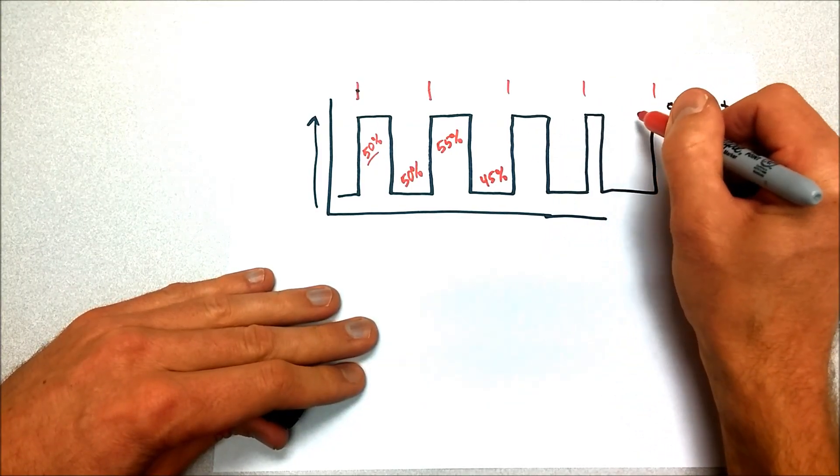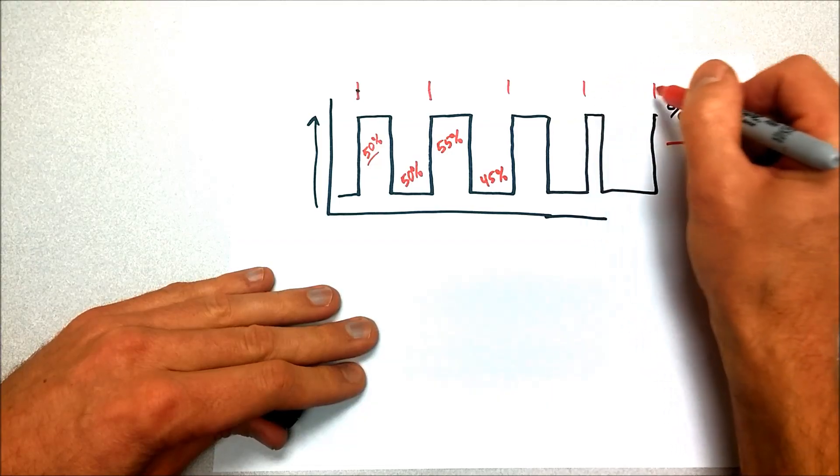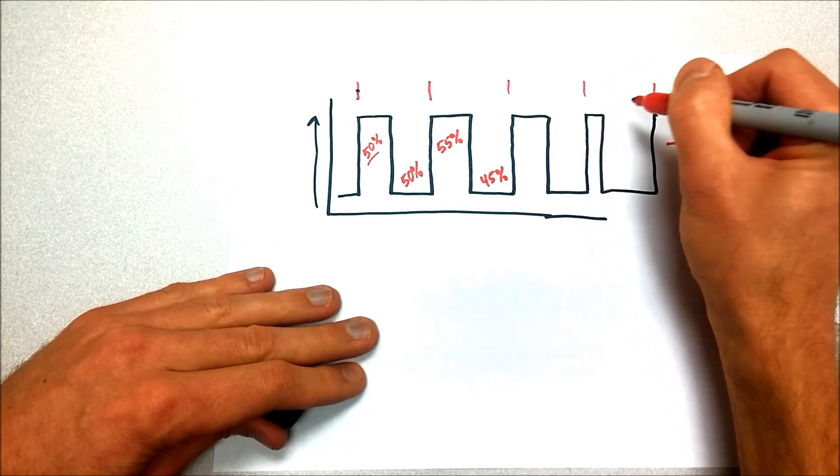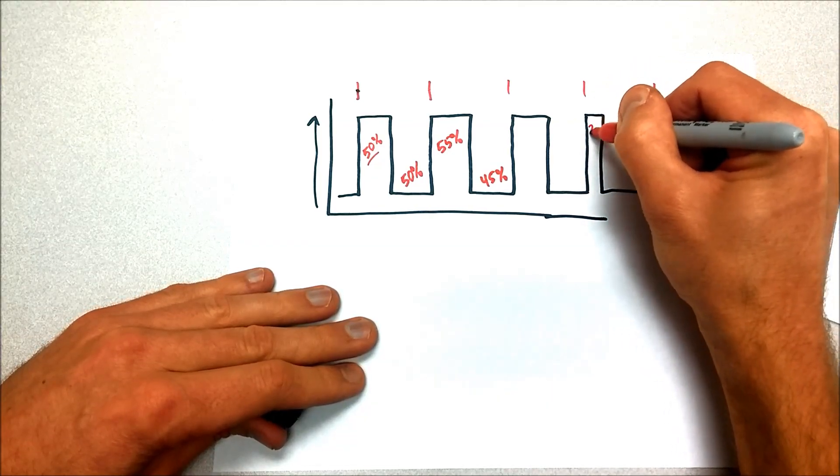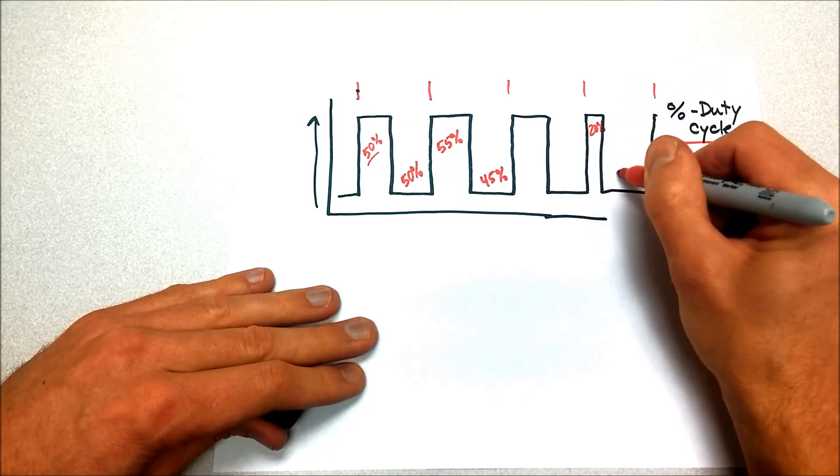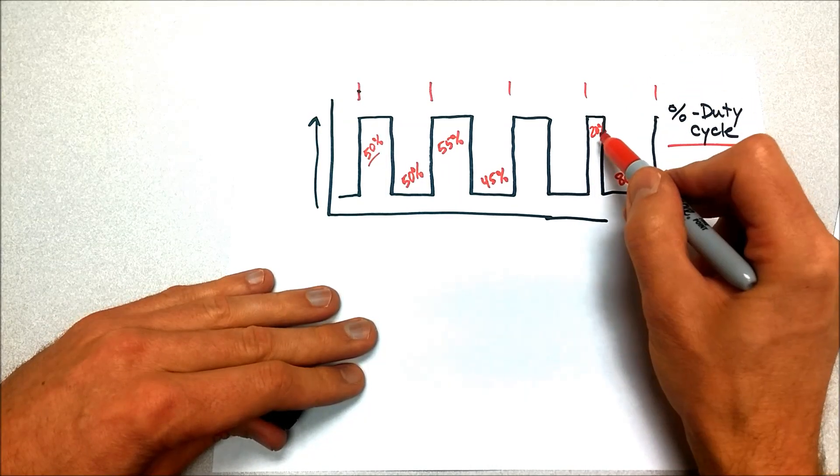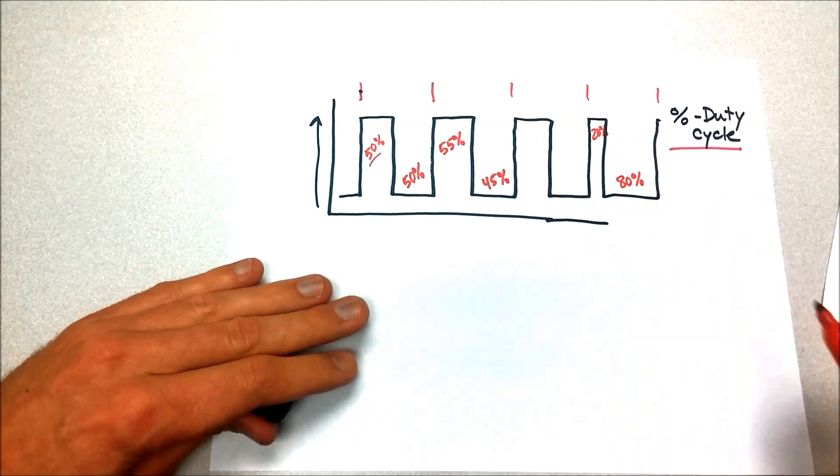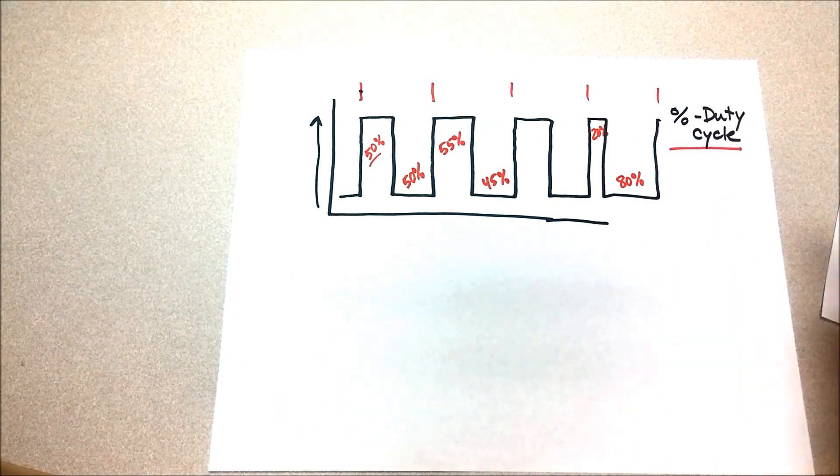This one looks like it's close to 50 again. But over here, we've got something that's much smaller. During this cycle, it looks like maybe it was on for only about 20% of the time, which means it was off for 80%. It's a 20% duty cycle at that point. So that's duty cycle.